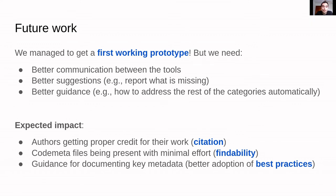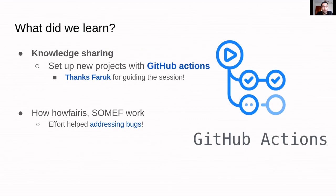As future work, we have this first prototype but we need to improve the communication between the tools and improve the suggestions produced in the reports. What we got was very basic but it was working, so we are very proud of that. We also want to produce better guidance on how to address these practices automatically, to help the community. The expected impact is that authors get proper credit for their work — by automatically creating citations and generating codemeta files with minimum effort — which improves findability for search engines, and provides guidance when documenting key metadata for adopting best practices.